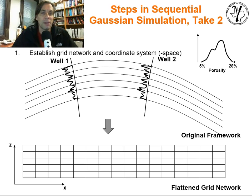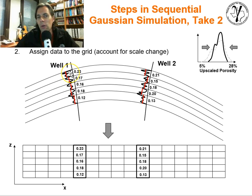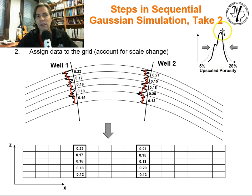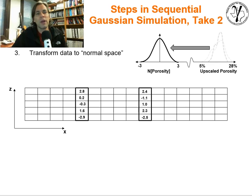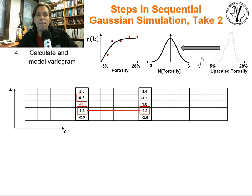Let's talk about the steps with more pictures. We have our porosity distribution we're trying to simulate on this grid. We have our realization framework — an anticline structure. We flatten it and we assign a grid network. We assign the data that's been interpreted and upscaled to the grid cells, so now data is populating our grid. There's been some upscaling — the distribution may have changed to reflect that upscaling, volume variance. We get less variability if we have a larger scale that we're working in.